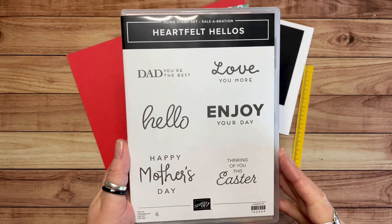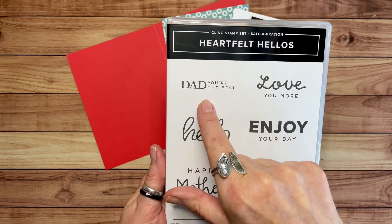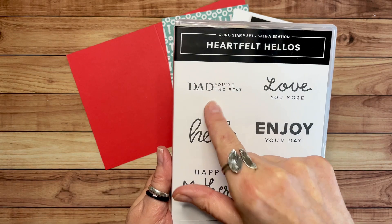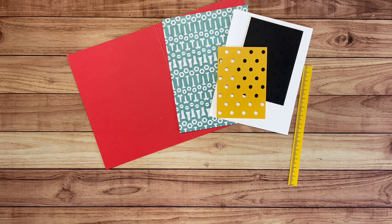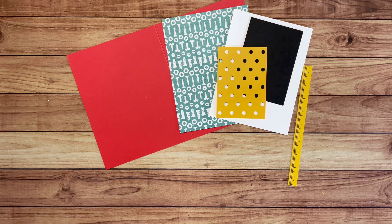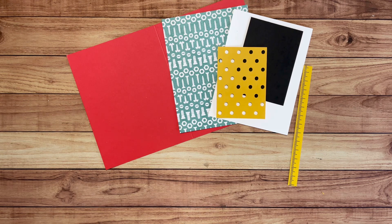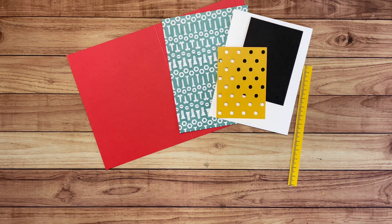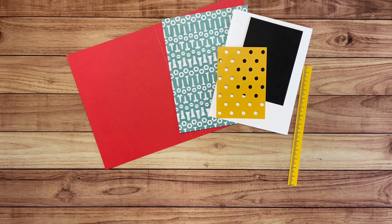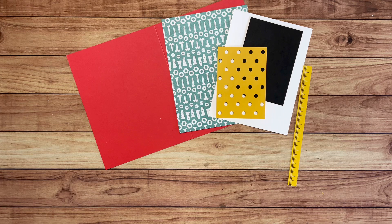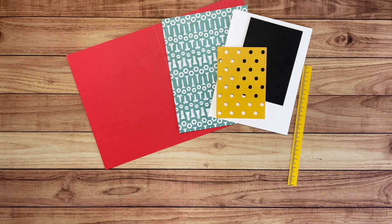First of all, I'm going to use this stamp set called Heartfelt Hellos, and specifically this stamp, Dad You're the Best. I'm also going to use a Designer Series paper called Trusty Toolbox that was part of Sale-A-Bration. Now you may also have the bundle, the Trusty Toolbox bundle that has dies and a stamp set, so you could definitely use that to make this card.